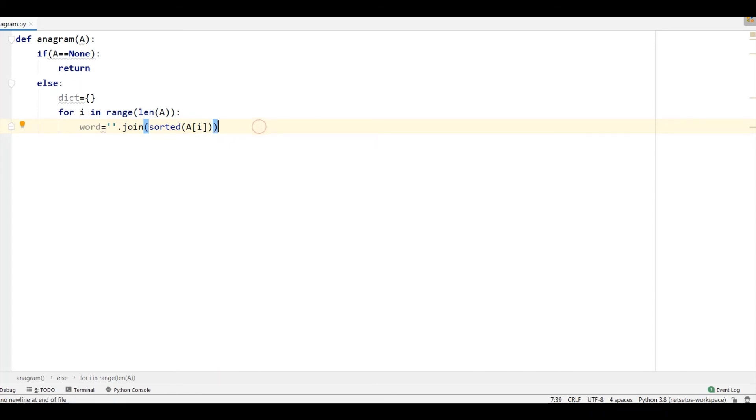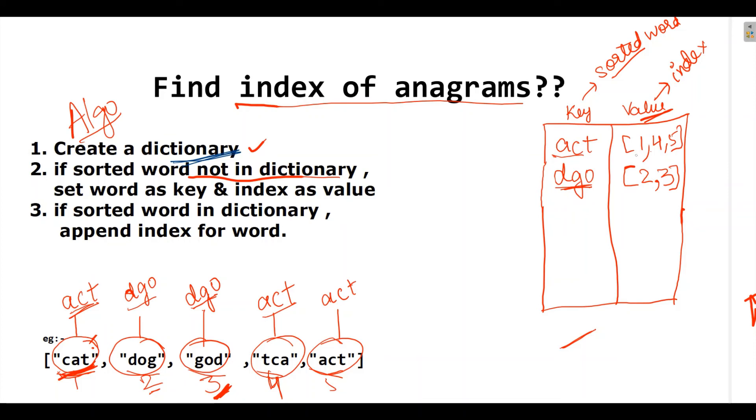Now, here I will check whether it is in dictionary or not. So, if word first of all, if it is not there in our dict, then I will take the word as a key and will give that index like I want here 1.